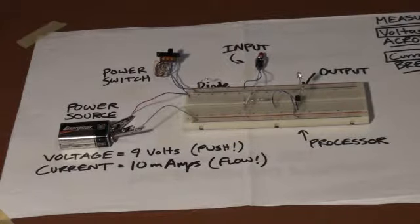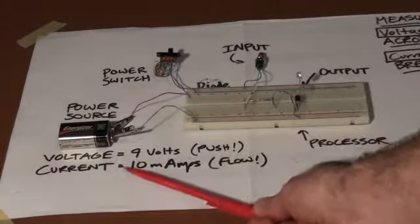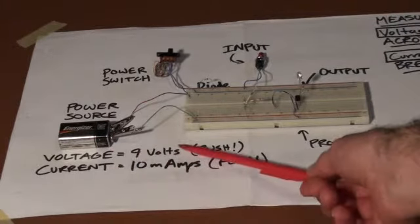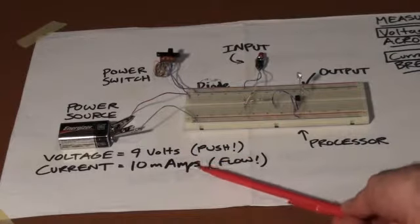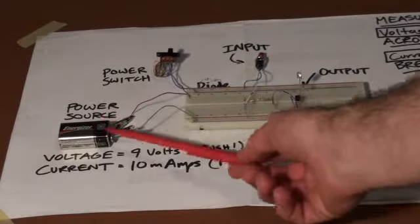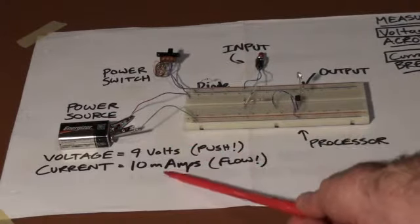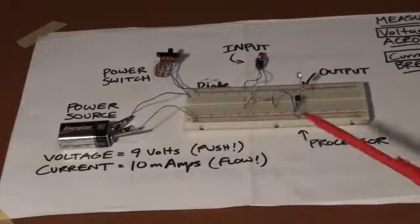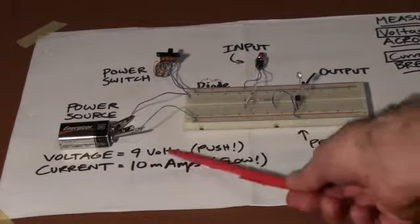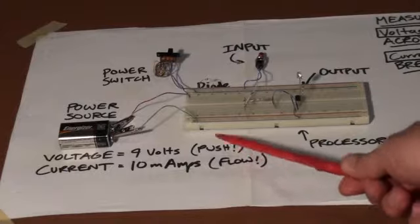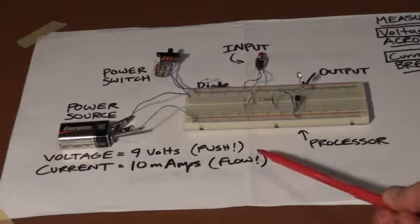In any electronic circuit there will be voltage and there will be current. Voltage is measured in volts, current measured in amps. In this case here we have 9 volts and we also have 10 milliamps of current. The 9 volts provides the push to allow the current to flow in the circuit.